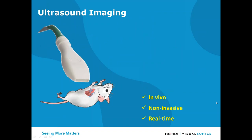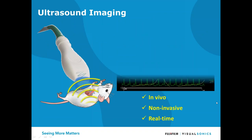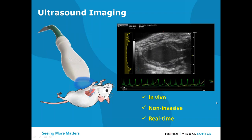First, ultrasound imaging. We use an ultrasound transducer and a coupling medium to look inside the body of an animal. We transmit sound into the body — the sound is reflected and comes back through the coupling medium into the transducer, and we can build an image from that sound. The advantages of ultrasound imaging are that it's in vivo, non-invasive, and real time.